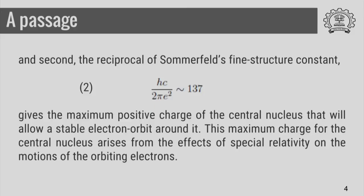And second, the reciprocal of Sommerfeld's fine structure constant, H c by 2 pi e squared is of the order of 137, gives the maximum positive charge of the central nucleus that will allow a stable electron orbit around it. This maximum charge for the central nucleus arises from the effects of special relativity on the motions of the orbiting electrons.